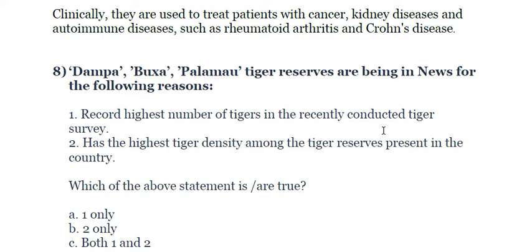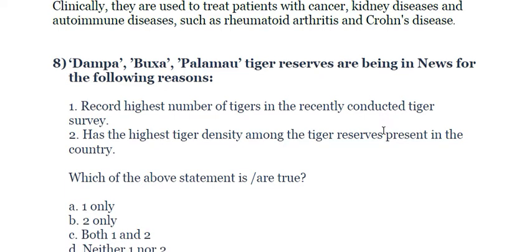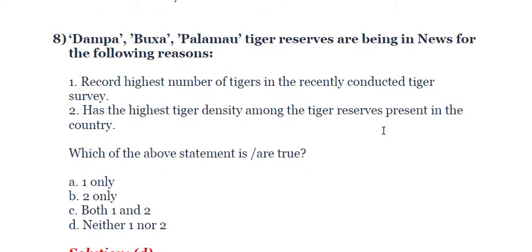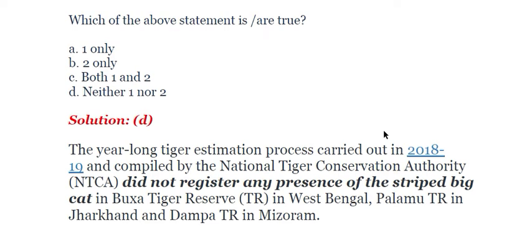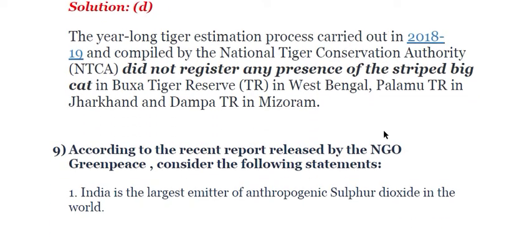The eighth question: Dumpa, Buksa, and Palamu tiger reserves are in the news for the following reasons — first, recording the highest number of tigers in the recently conducted tiger survey; second, having the highest tiger density among tiger reserves in the country. Both statements are incorrect. The National Tiger Conservation Authority's tiger census found that Dampa, Buksa, and Palamu tiger reserves do not have even a single tiger. Buksa is in West Bengal, Palamu is in Jharkhand, and Dampa is in Mizoram. The answer is D.